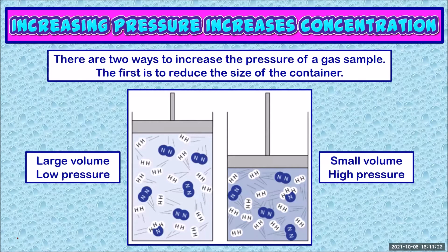The first way to increase the pressure of a gas sample is to compress it, that is to make its container smaller. We remember Boyle's Law from our Gas Laws study, which states that the pressure of a gas sample is inversely proportional to its volume, provided the number of moles of gas and the temperature stays the same. Reducing the volume increases gas pressure.